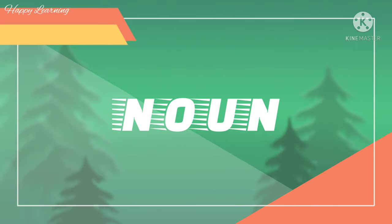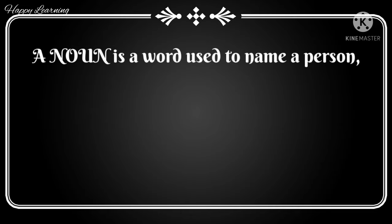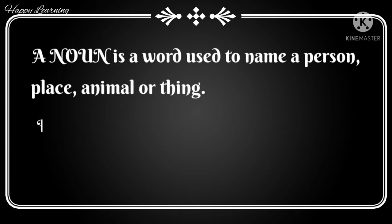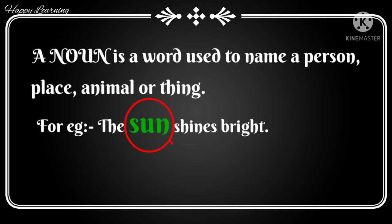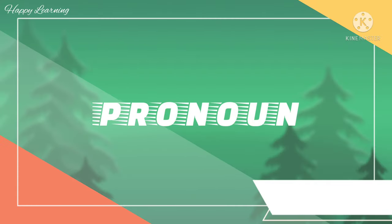First of all, noun. A noun is a word used to name a person, place, animal, or thing. For example, 'The sun shines bright.' Here, 'sun' is the name of a thing, which makes it the noun.